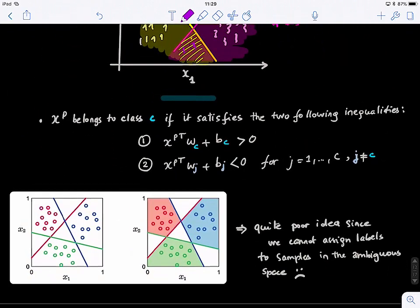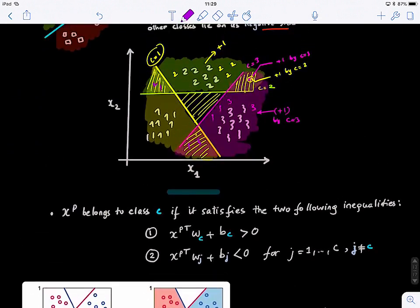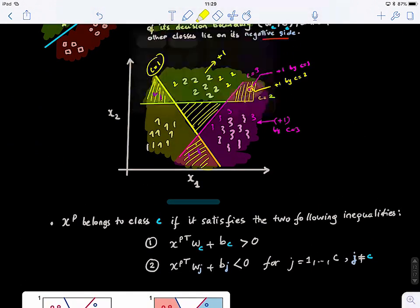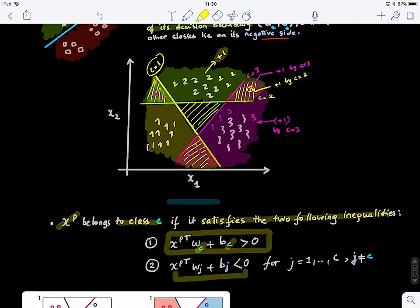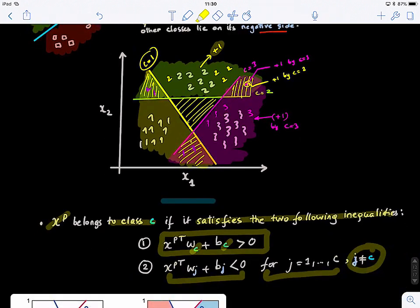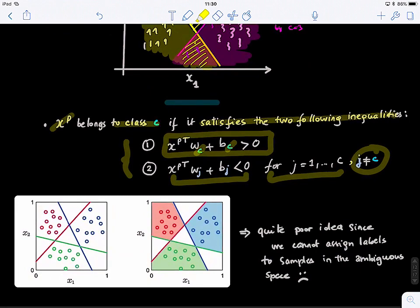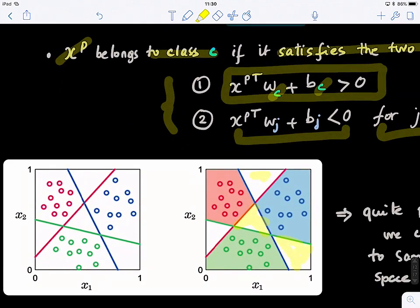So if we write it mathematically, so a point XB belongs to class C if it satisfies the following inequalities. First one, it has a positive, it lies on the positive side of the classifier of the classification decision boundary by class C. So it lies on that side, but it has a negative, basically, label for all other classifiers different from C. So these are problematic, because they have been assigned positive labels, but by not only the right classifier, but by a second classifier. So this condition is not very satisfied. So it's quite problematic. And you can see it right here. So we have these problematic areas that we want to solve. So how can we do that?